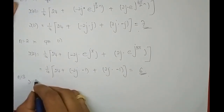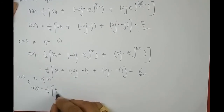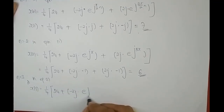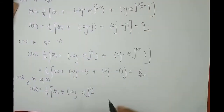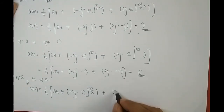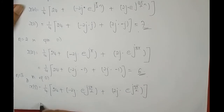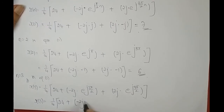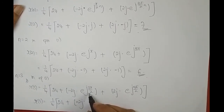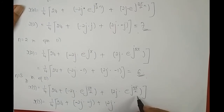Putting n = 3 in Equation 1: x[3] = 1/4 × [24 + (−2j)·e^(j3π/2) + 2j·e^(j9π/2)]. Now e^(j3π/2) = cos(3π/2) + j·sin(3π/2) = −j, and e^(j9π/2) = j. Substituting and simplifying gives x[3] = 5.